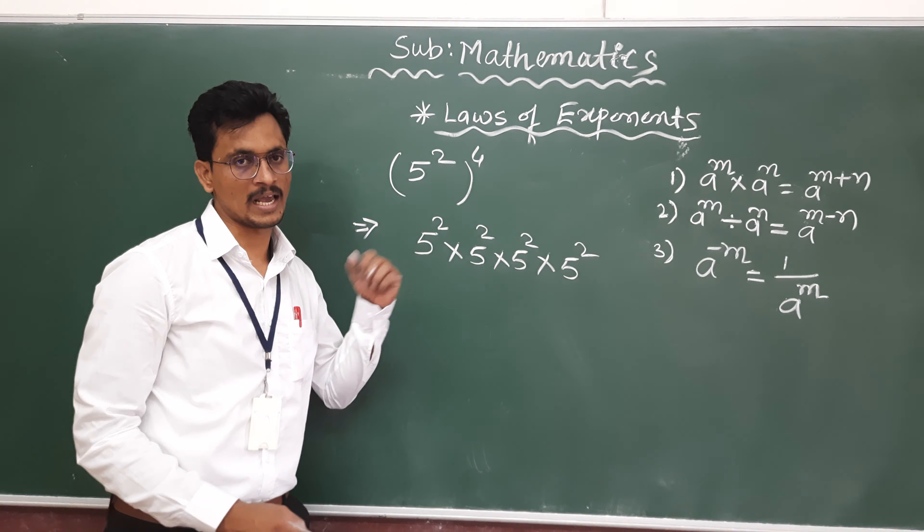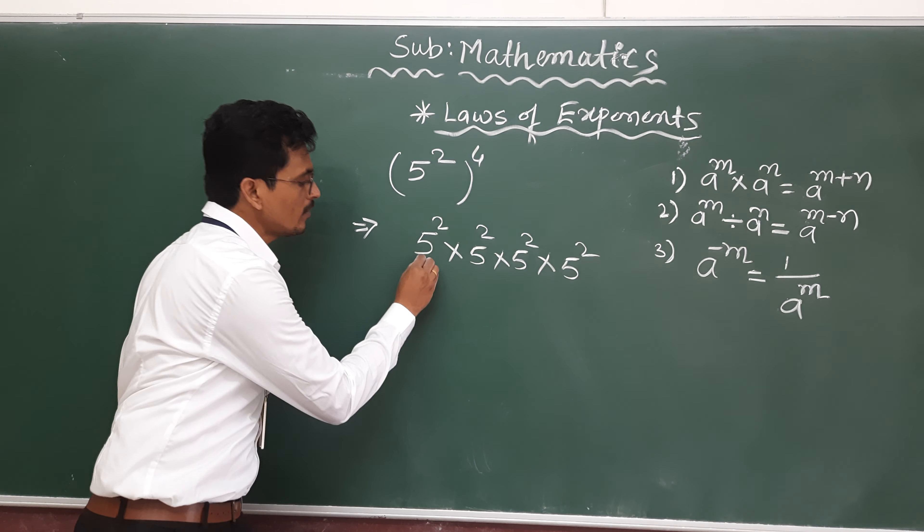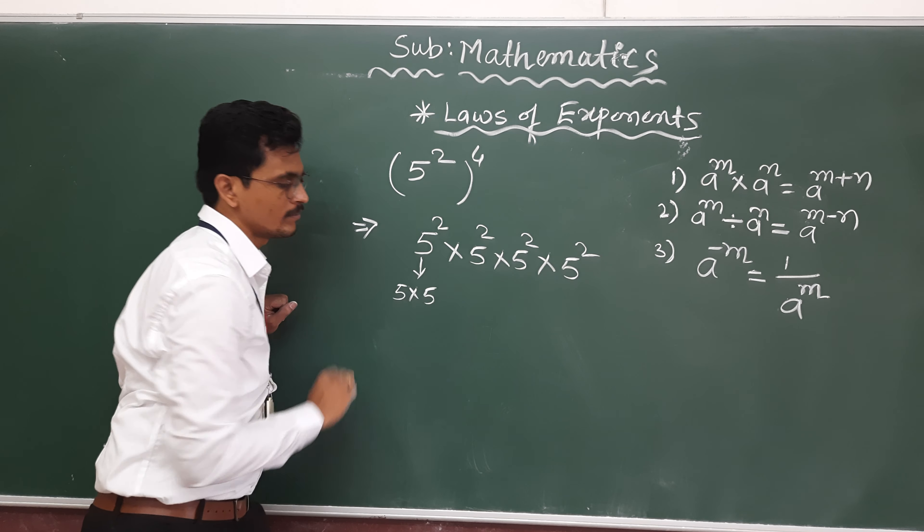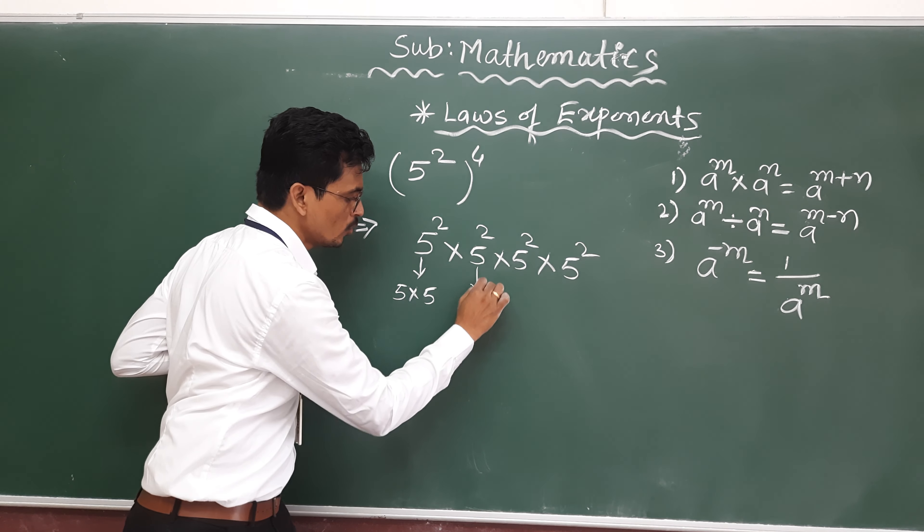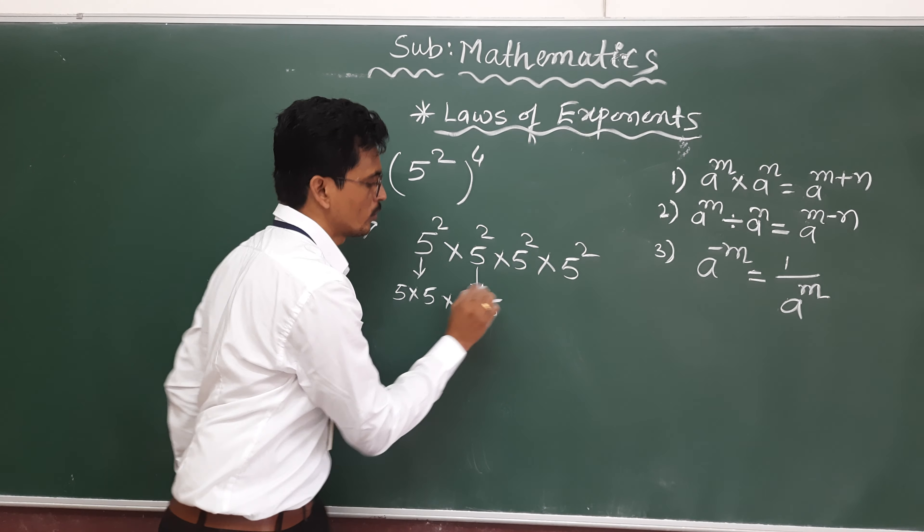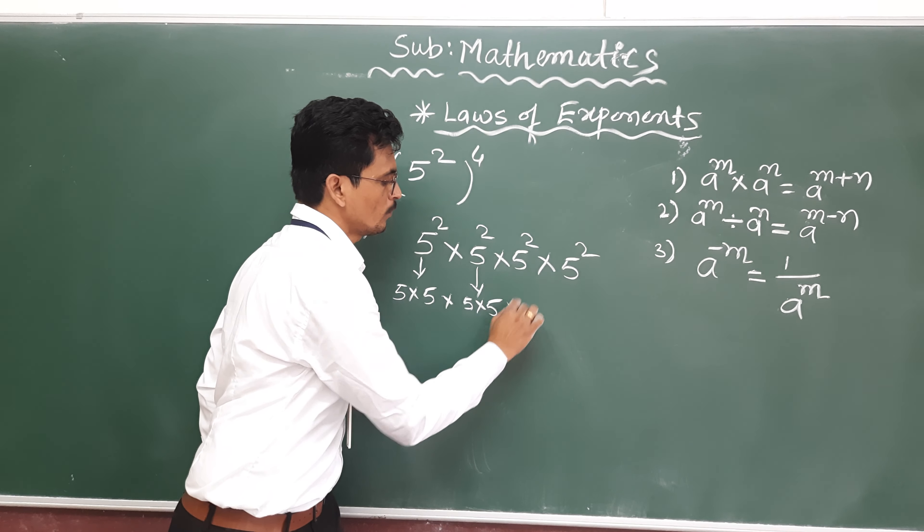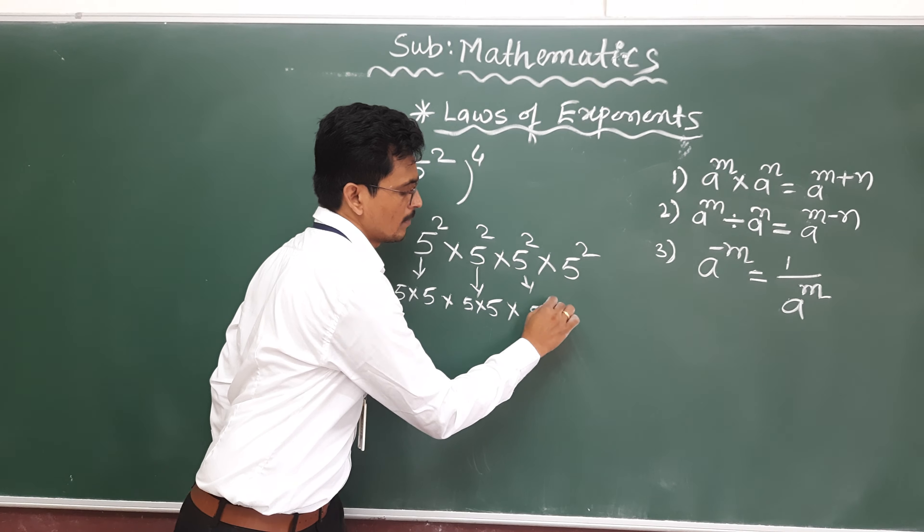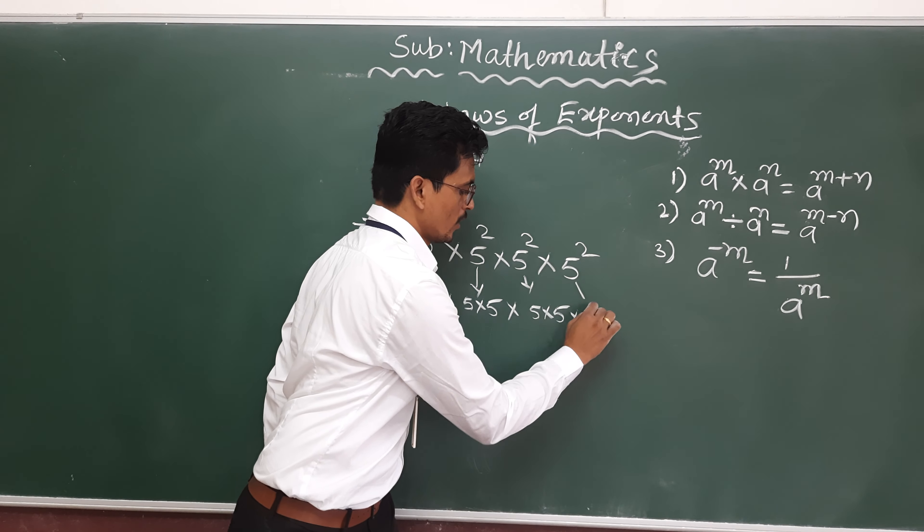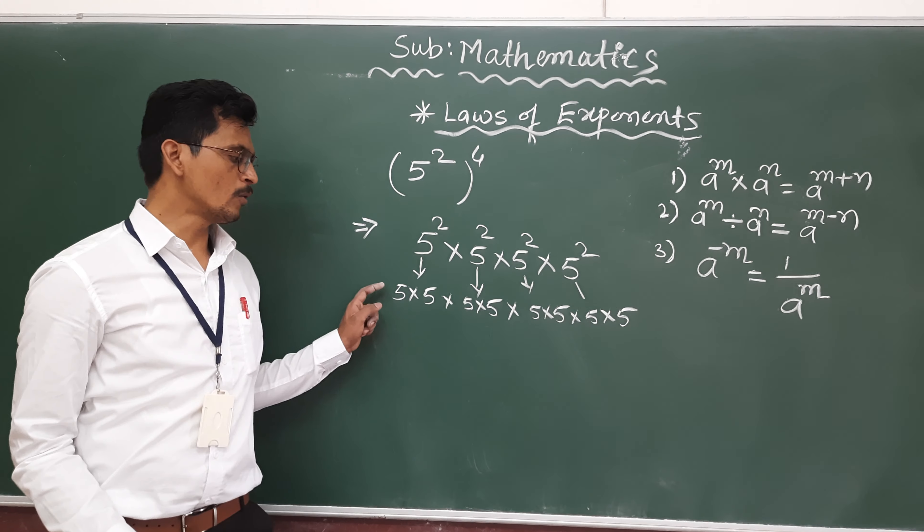So we can write. Now, individual, if you will check 5 square, we can write 5 multiply with 5, 2 times. Same this also. 5 multiply with 5, 2 times. And this is also 5 multiply with 5, 2 times.